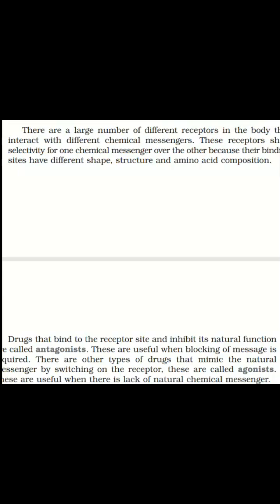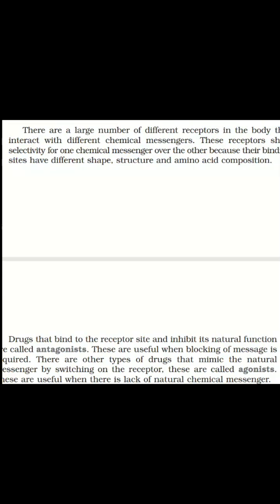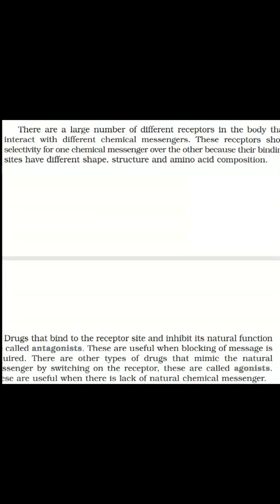Drugs can bind to the receptor sites in two ways: by an agonistic way and by an antagonistic way. 'Anti' means against — so antagonistic drugs are drugs that bind to the receptor site and inhibit its natural function.